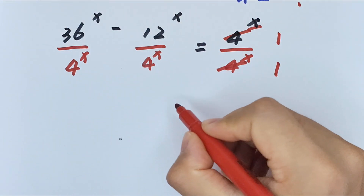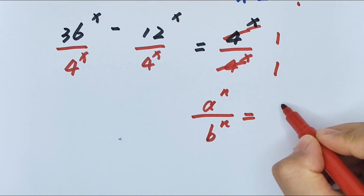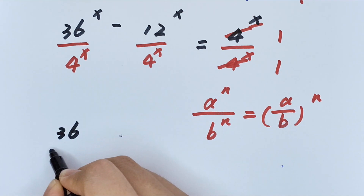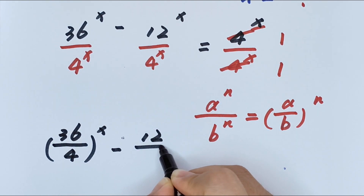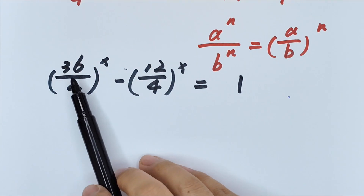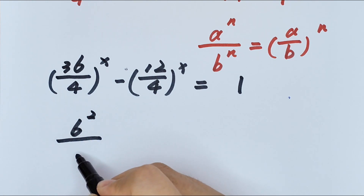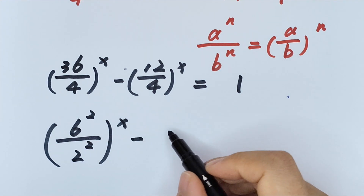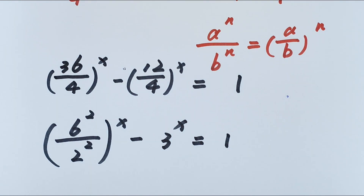We apply the formula: a to the power of n over b to the power of n equals (a/b) to the power of n. So here we get (6/4) to the power of x minus (12/4) to the power of x equals 1. Now 6/4 is the same as 6 squared over 2 squared, and 12/4 equals 3, so we have (6²/2²) to the power of x minus 3 to the power of x equals 1.